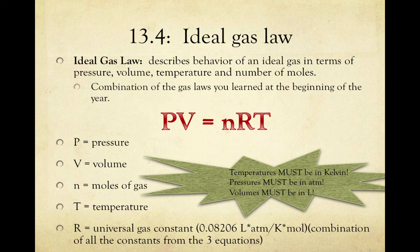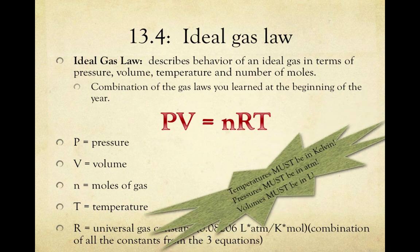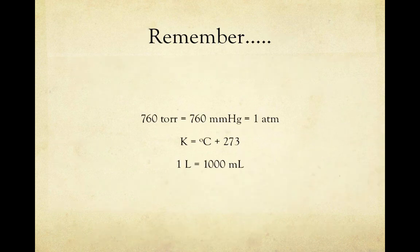You will be given the gas constant — you don't need to memorize it. This law works as long as your temperatures are in Kelvin, your pressures are in ATM, and your volumes are in liters. To convert between ATM, Torr, and millimeters of mercury: 760 Torr equals 1 ATM. To convert to Kelvin from Celsius, add 273. To convert from milliliters to liters, divide by 1,000.